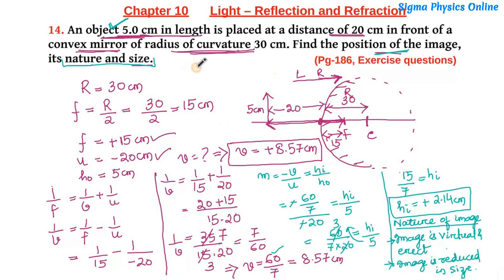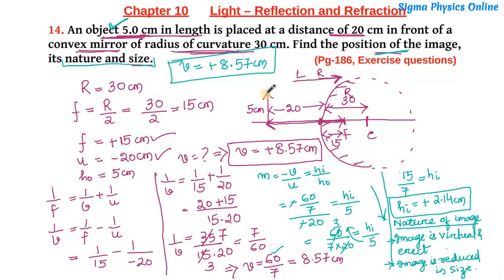The answer to this question: the image distance is +8.57 cm, and the image is virtual, erect, and diminished in size. Now let's draw the ray diagram to verify this. One ray goes parallel to the principal axis; after reflection it diverges and appears to come from the focus. Another ray passes through the center of curvature undeviated. These two rays meet and show the position where the image is formed.